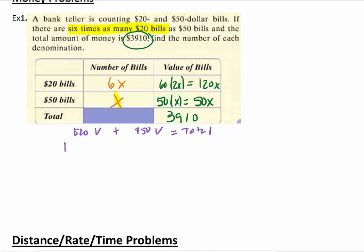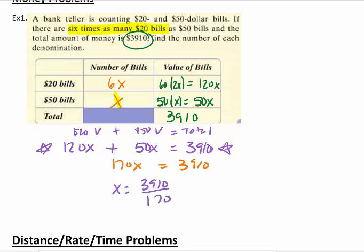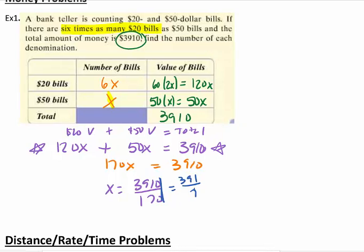For this problem, we're pulling from the chart: 120x plus 50x equals $3,910. This equation needs to be on your paper. So now we're going to solve. We add them together, we get 170x equals $3,910. And to solve this, we take $3,910 over $170. Right off the bat, you should actually know that these zeros cancel. And so if you didn't have a calculator, but you should, we should be able to divide this out. You should get 23.